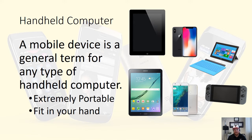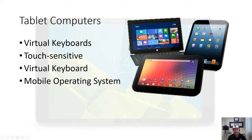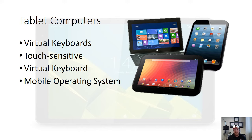That's what handheld computers are. Now let's focus on tablet computers. Tablet computers use virtual keyboards, which makes them very unique. You'll notice there's a physical keyboard on the Microsoft Surface, but you can disconnect it and use it by touch screen. Your more standard tablets — the iPad and Android tablet — are completely touch sensitive. You can attach a keyboard to these, but most of the time you'll be using the virtual keyboard. These tablets use mobile operating systems: iOS and Android.